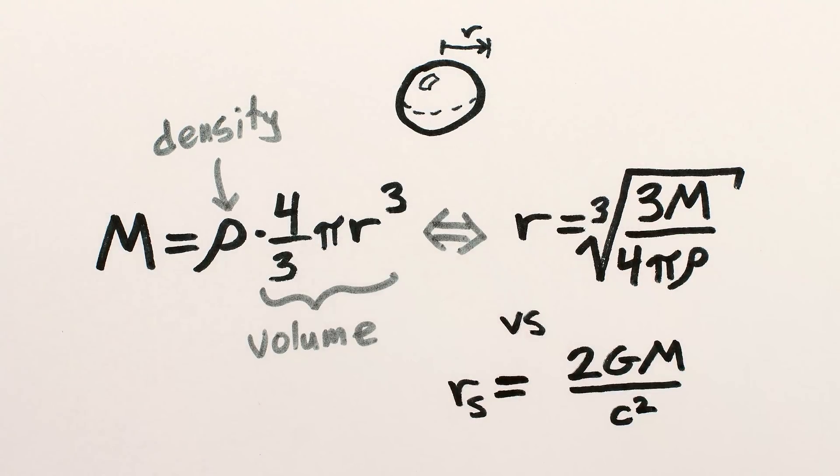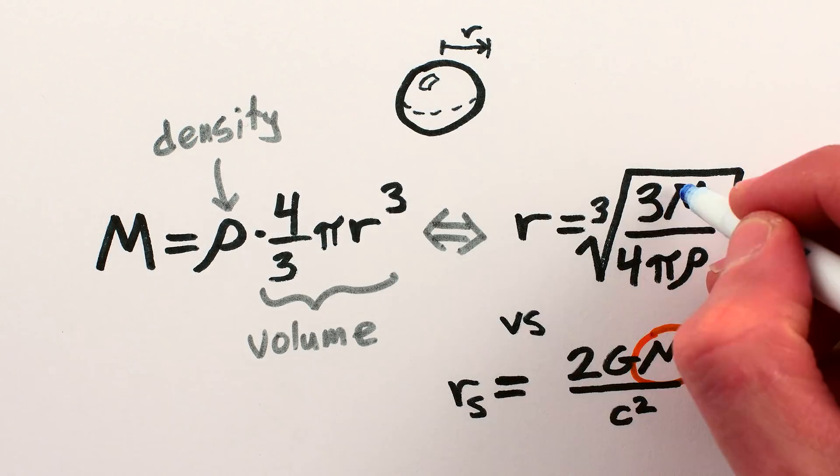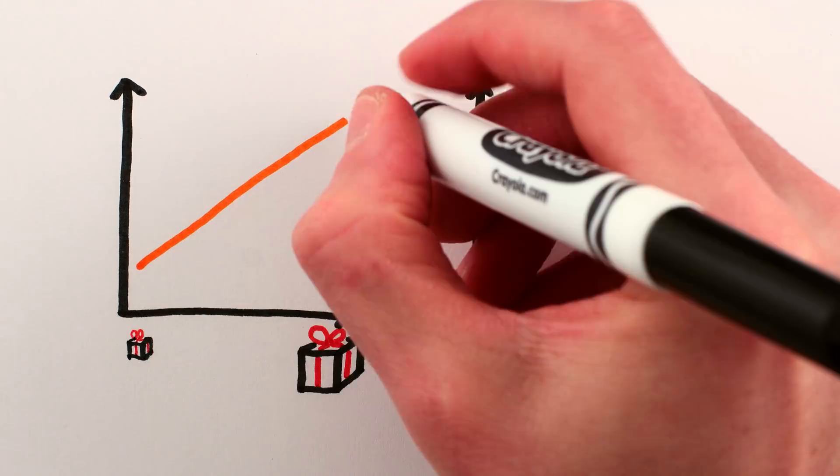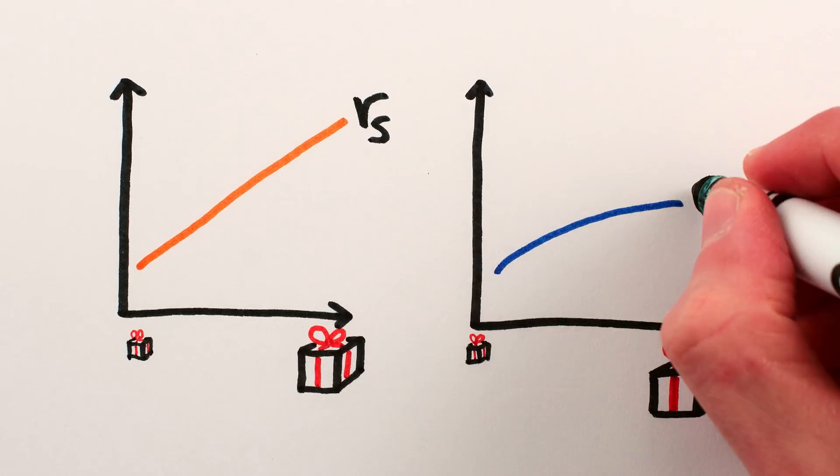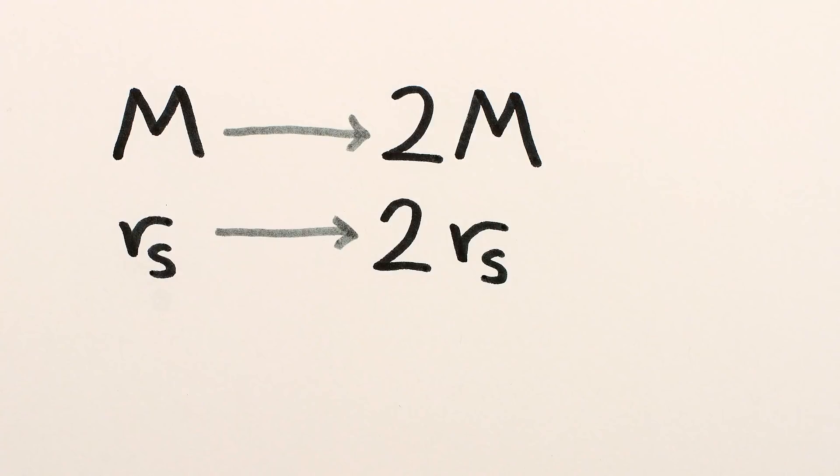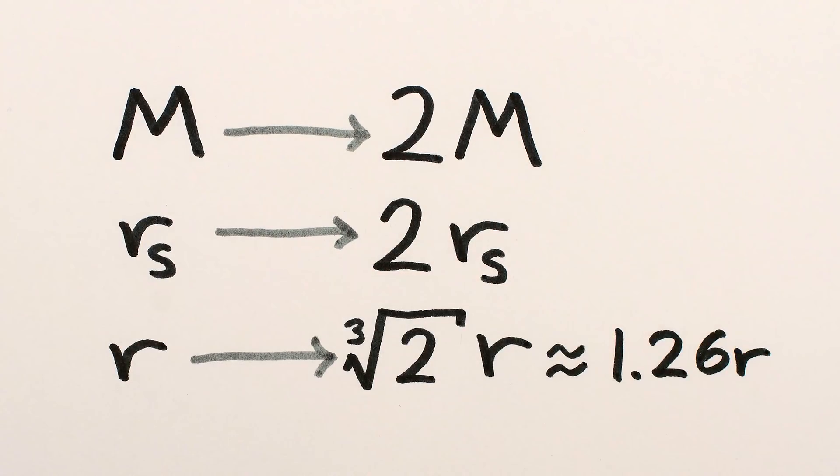Now, the Schwarzschild radius of an object is proportional to mass directly, no cube roots involved, so as an object's mass increases, its Schwarzschild radius will increase much faster than its actual radius. Double the mass, double the Schwarzschild radius, but only 1.26 times the actual radius.